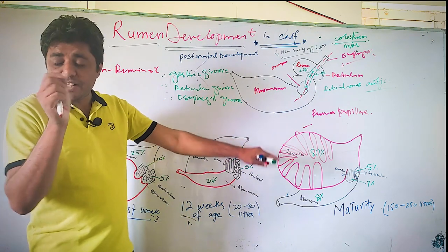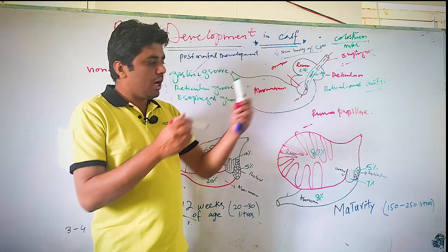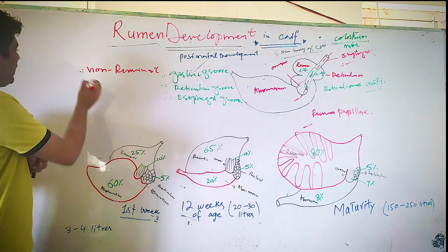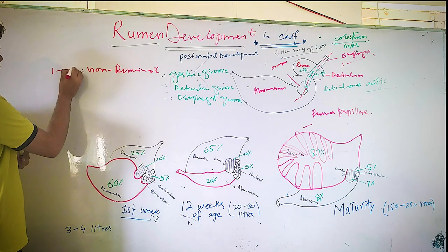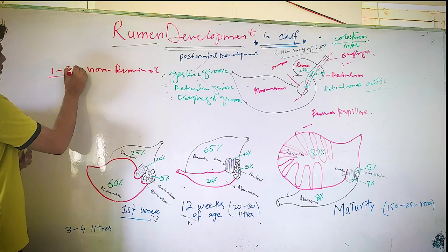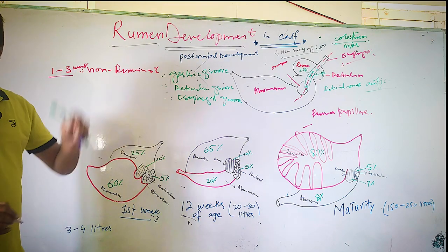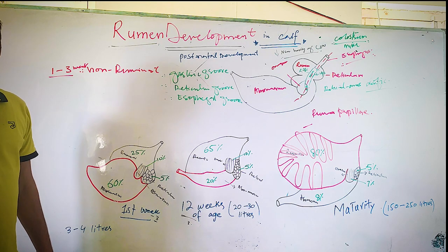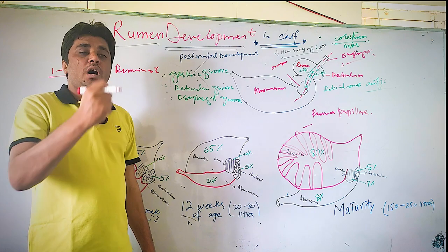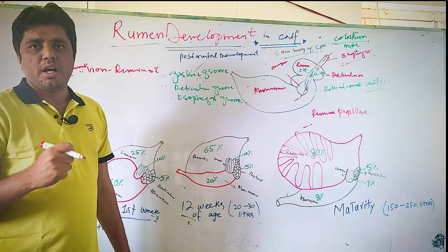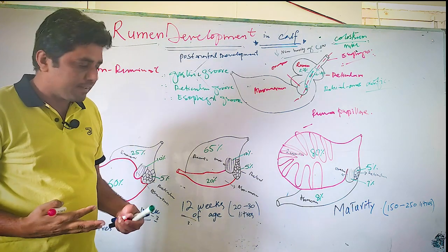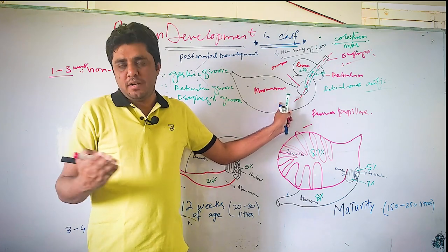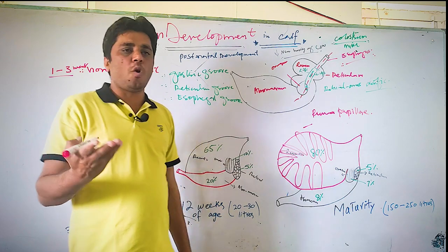So the point is that in the early stage, from one to three weeks, we do not have a developed rumen — the calf is non-ruminant. At that time, you have to apply what kind of food? Food which has protein, because the abomasum can digest protein. Milk is the source of protein — casein. So at the early stage, in the first one to three weeks, we provide milk to the calf.